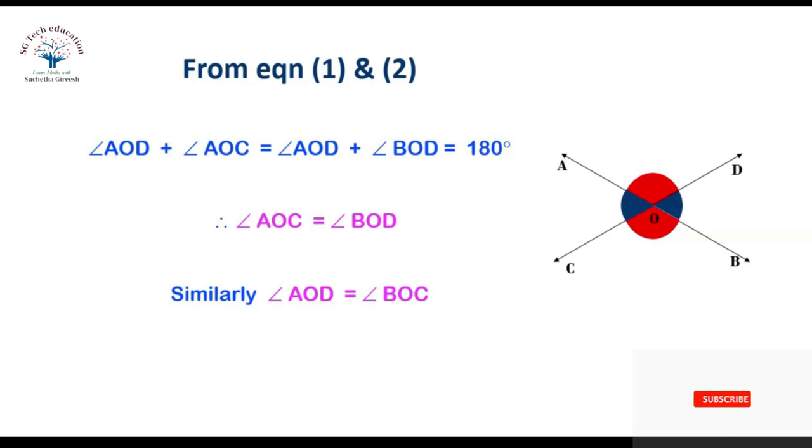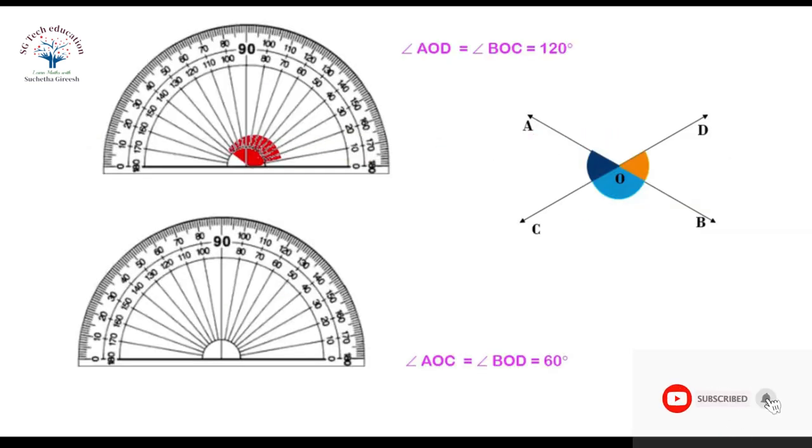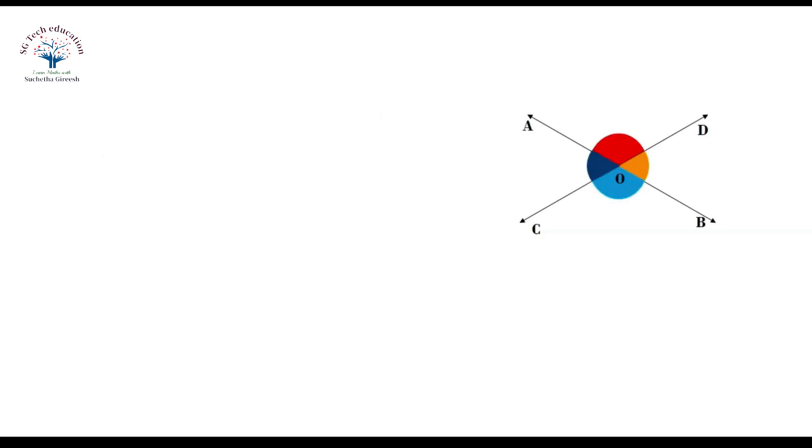Here angle AOC equals angle BOD. Similarly, angle AOD equals angle BOC. Now we can observe that the vertically opposite angles are always equal. The measurement of angle AOD equals the measurement of angle BOC, and the measurement of angle AOC equals the measurement of angle BOD.